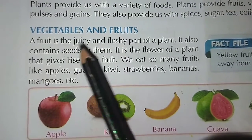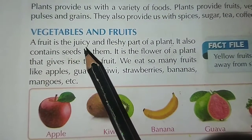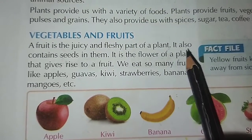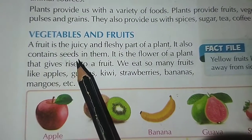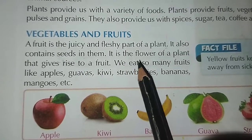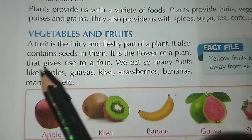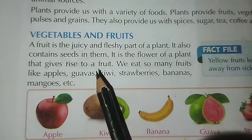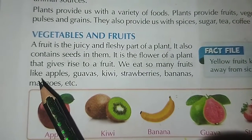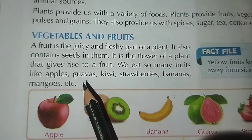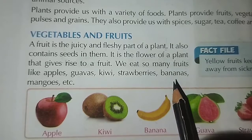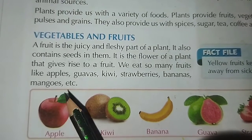Vegetables and fruits. A fruit is the juicy and fleshy part of a plant. It also contains seeds. It is the flower of a plant that gives rise to a fruit. We eat so many fruits like apples, guavas, kiwi, strawberries, bananas, mangoes, etc.